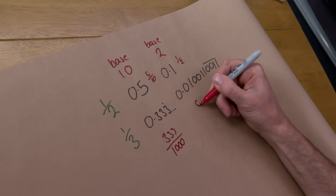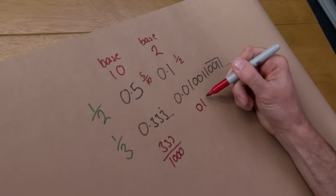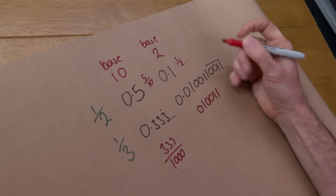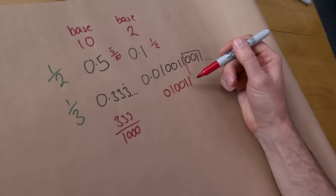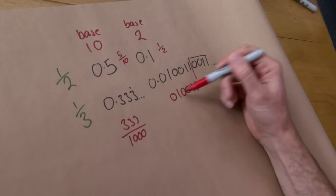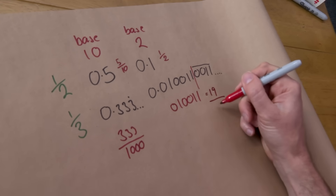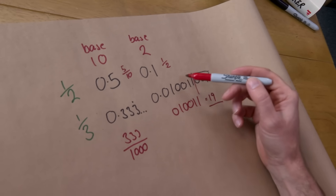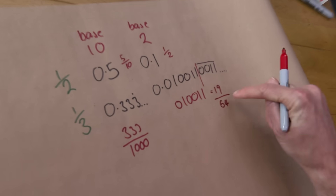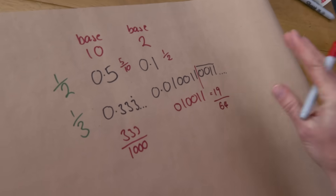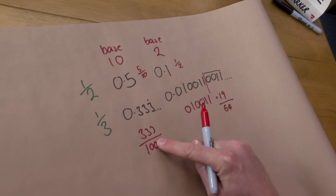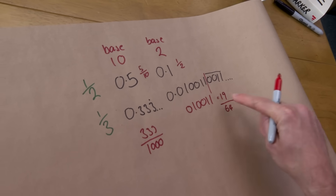What you're doing is taking however many decimal places you've got and then dividing by 10 to the power of how many there are. So 0.5 is 5 divided by 10 — that gives you a half. In binary, 0.1 is 1 divided by 2 — that's a half, quite nice. For the repeating third, if we stop at 0.010011 that's 19 divided by 2 to the power of 6, which is 64. That is close to a third, but not quite. The more digits we include, the closer we get — you can assemble a binary fraction to approximate any value.